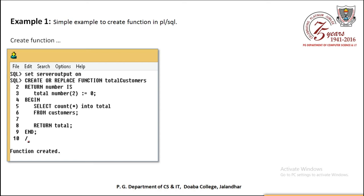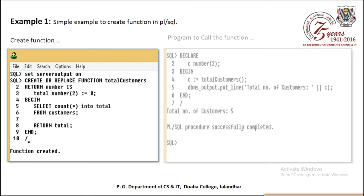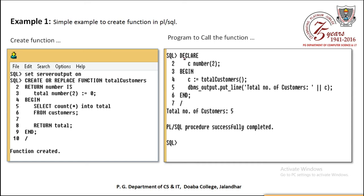Slash enter करके enter press करने पर function created आ जाएगा। Function को call करने के लिए एक program लिखेंगे - DECLARE c NUMBER(2); BEGIN c := total_customers(); - total_customers हमारे function का name है इसलिए round brackets use की हैं। फिर print करवाया 'Total number of customers:' और c। Output आई total number of customers 5, then PL/SQL procedure successfully completed।